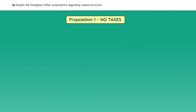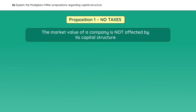The first proposition, when there are no taxes, states that the market value of a company is not affected by its capital structure. However, for this to be true, the following five assumptions must be met.